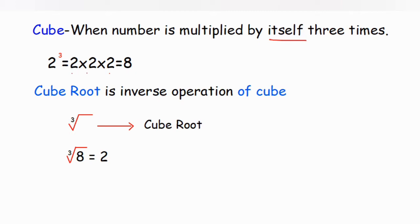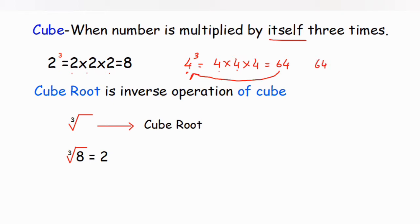So eight is the cube of two. Similarly, four cubed means multiplying four three times: four into four into four — four fours are sixteen, sixteen fours are sixty-four. So sixty-four is the cube of four. Now suppose I want to find out in reverse: what number did I multiply three times to get sixty-four?